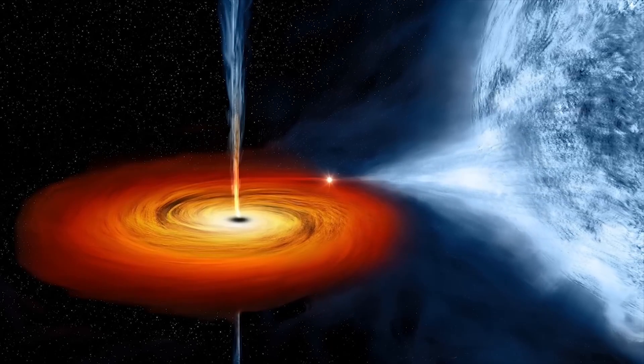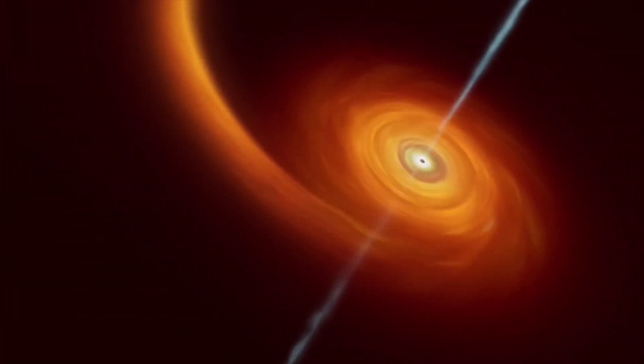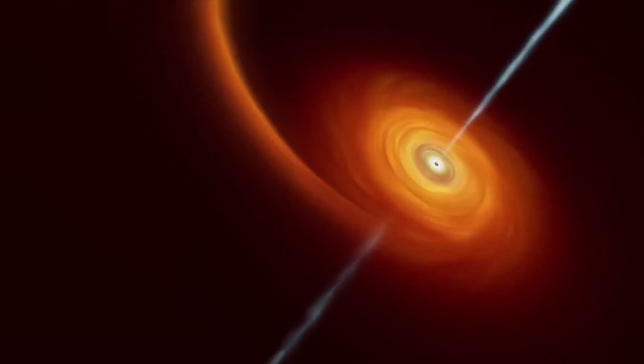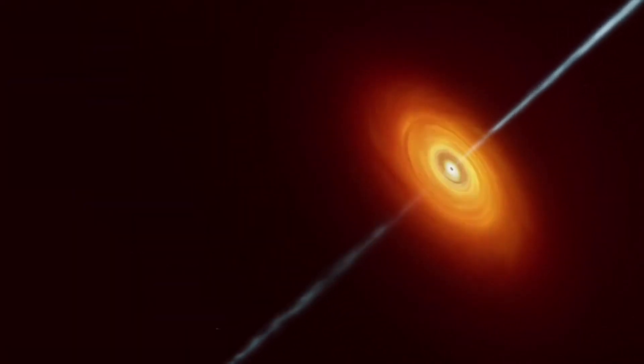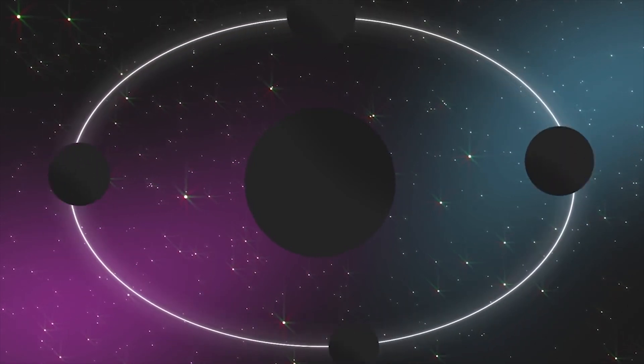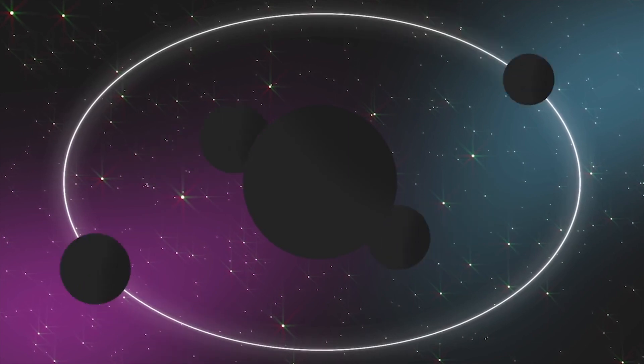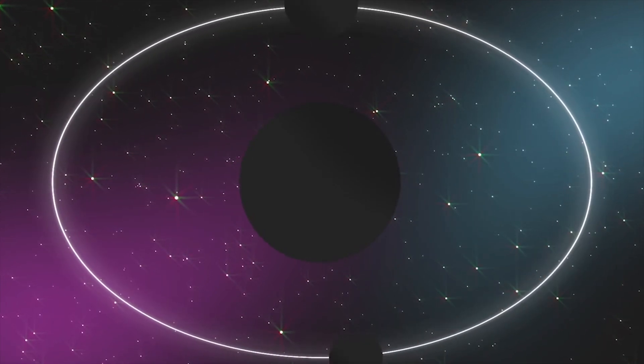Now, let's explore the technical details behind TON 618's colossal mass. The mass of a black hole is determined by the amount of matter it has absorbed over time. As TON 618 resides in the center of a galaxy, it has the advantage of drawing matter from its surroundings. The immense gravitational pull of TON 618 captures nearby gas, dust, and stars,